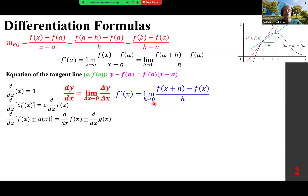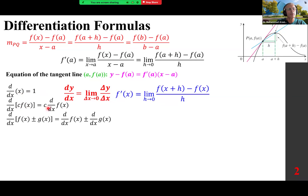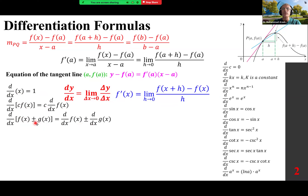Then we look at some formulas. The derivative of x is 1. The derivative of c times f(x): c sits in front. The derivative of the sum is the sum of the derivatives. The derivative of the difference is the difference of the derivatives. We develop formulas from the definition: the derivative of a constant is 0, the derivative of k times x is k where k is a constant, and the power rule.